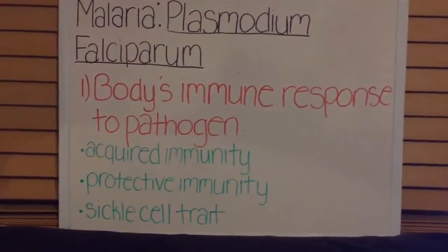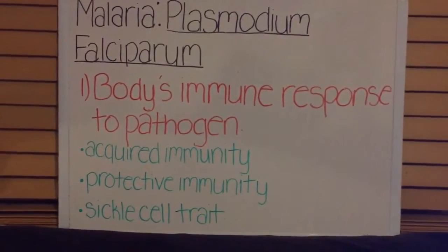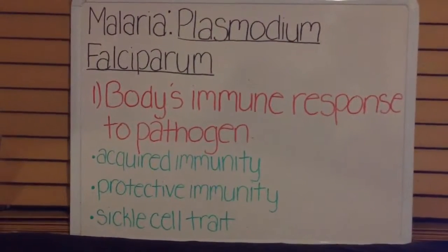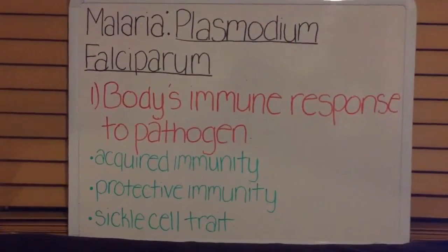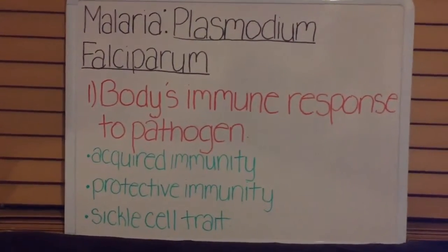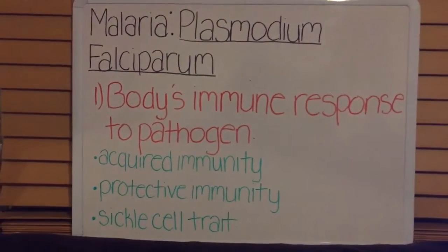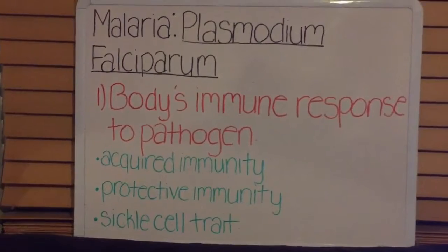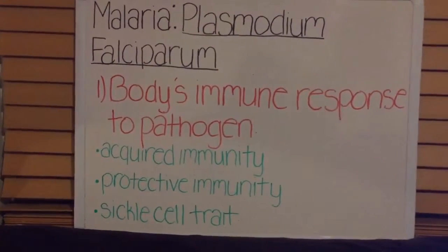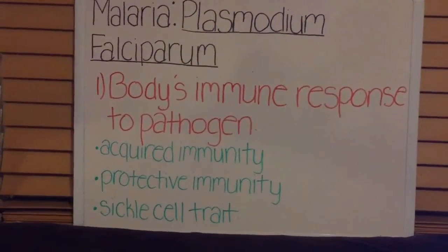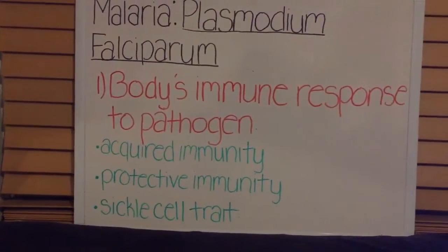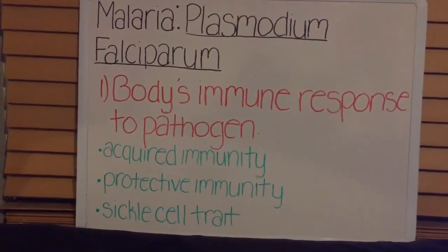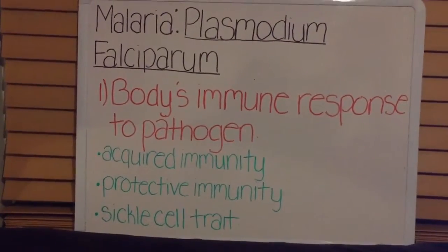The protective immunity doesn't mean the child is completely immune to the pathogen. It means the malaria pathogen can still infect the child, but he or she will not develop severe malarial symptoms. Also, those who inherit the sickle cell trait are protected against P. falciparum, but there is no explanation as to why this is possible. Without treatment, it makes it difficult for the body's immune system to fight off this malarial parasite.